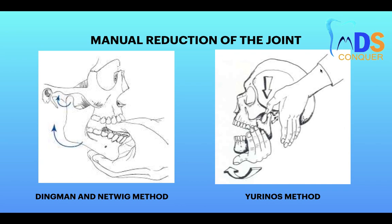In the Dingman and Natuwick method, the operator stands in front of the patient, thumbs are placed bilaterally onto the mandibular molars, and the mandible is pushed downwards and backwards into the fossa. In the other method, the operator stands behind the patient; one hand is placed on the condylar head and the other hand holds the body of the mandible, pushing it downwards and backwards into the fossa.